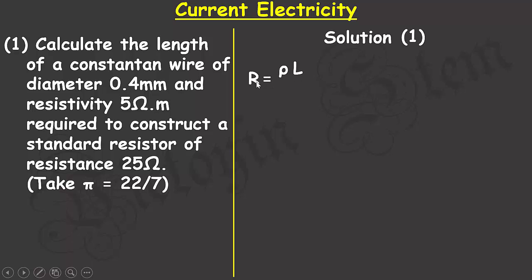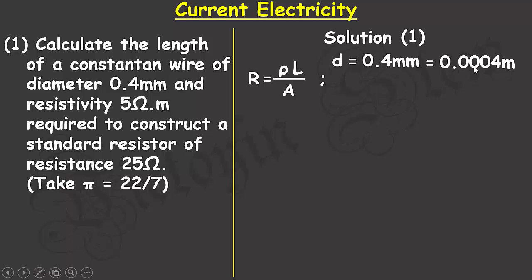The resistance is equal to the product of the resistivity and the length, and inversely proportional to the area. In the question I was given the diameter of the constantan wire as 0.4 millimeters. Converting to meters, I divide by 1000, which gives 0.0004 meters. The resistivity rho is given as 5 ohm-meters.